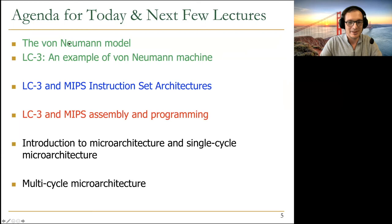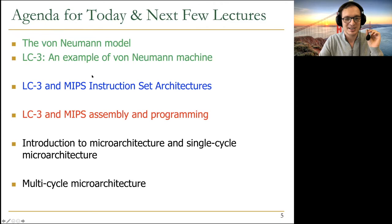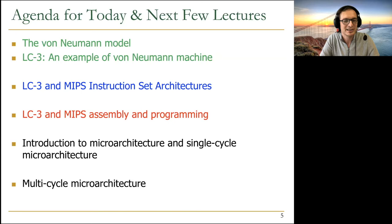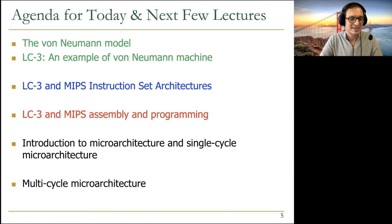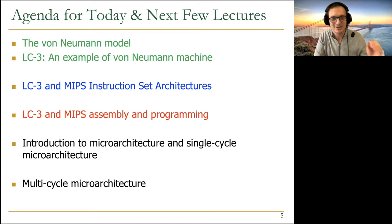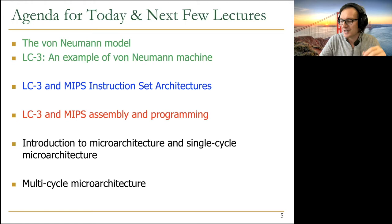I'm hoping to cover the von Neumann model and LC3, an example of a von Neumann machine, but we're also going to talk about MIPS architecture. LC3 is an educational computer developed by Pat and Patel in one of the books you're reading. MIPS is a commercial architecture that has been successful, including in smaller embedded devices like set-top boxes and TVs. It's a relatively clean architecture, good for education, and very similar to RISC-V.